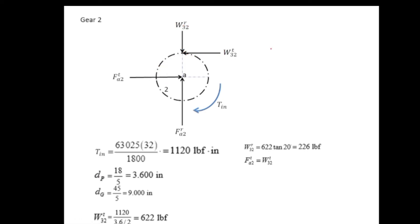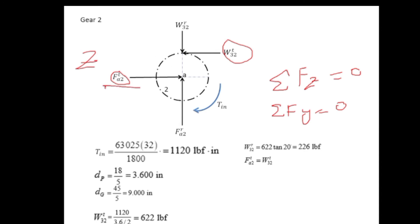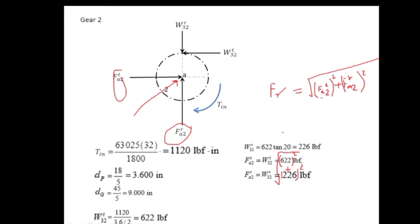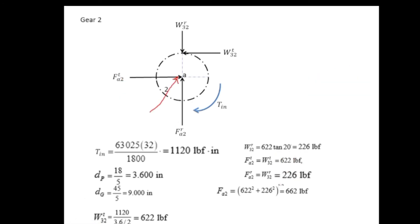Using equilibrium — sum of forces in z equals zero and sum in y equals zero — the reaction force components on the shaft are equal in magnitude to the applied forces: fr2t = 622 lbf and fr2r = 226 lbf. The resultant reaction on shaft A is found using the Pythagorean theorem: √(622² + 226²) = 662 lbf. This reaction is shared equally by bearings A and B, so each bearing carries 331 lbf.